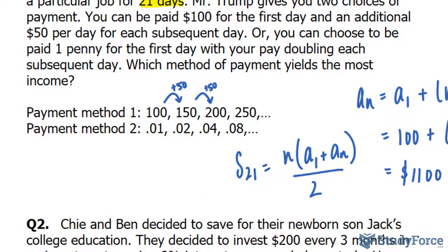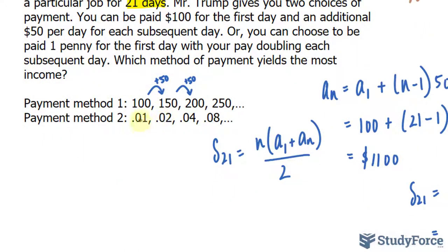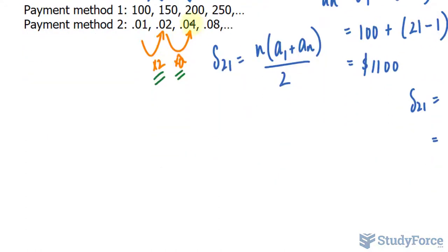What about payment method two? It almost feels like a scam — you're being paid one penny on the first day, and then the next day that's doubled. Does it even come close? Well let's find out. To go from 0.01 to 0.02, we multiply the first term by a factor of 2. To go from 0.02 to 0.04, again you multiply by a factor of 2. If there is a common ratio — a common constant that you multiply the previous term by to get the subsequent term — then it's a geometric sequence, and this is what we have here. Multiplying 0.04 times 2 gives 0.08. So the common ratio R is 2, and the very first number in the sequence is 0.01.